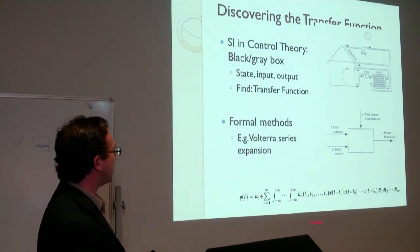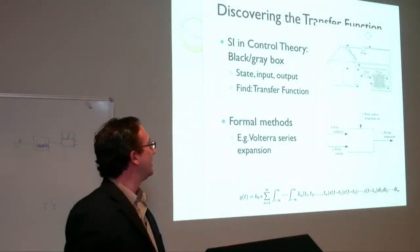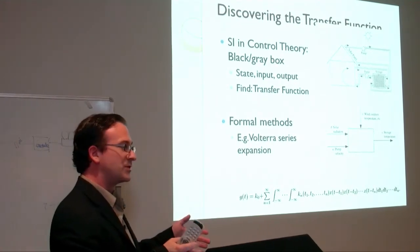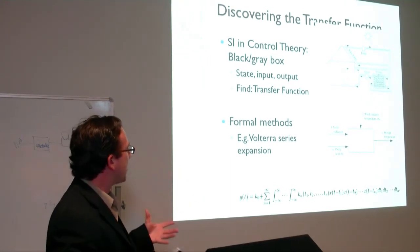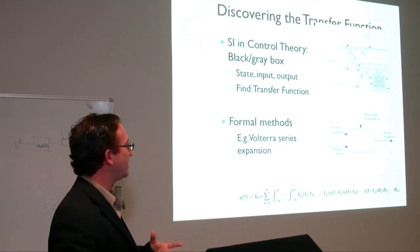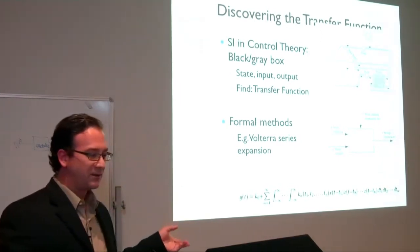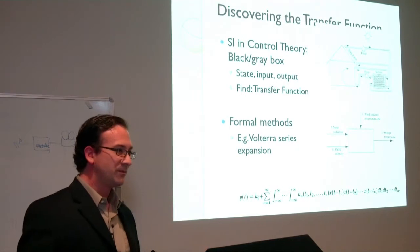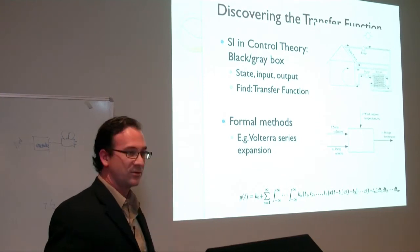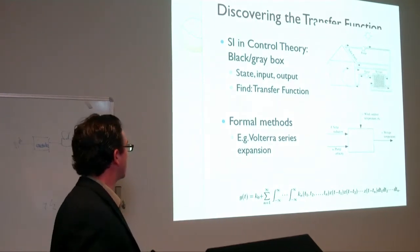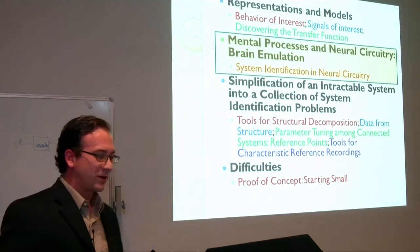One formal method is the Volterra series expansion — a set of kernels multiplied with the input to describe the output. This expansion allows you to take into account all the previous history of the system. To simplify, you make many of those kernels zero. Usually the Volterra series is a bit too general for neural circuit identification, though some people do use it — including Ted Berger, who we'll get to in a moment.